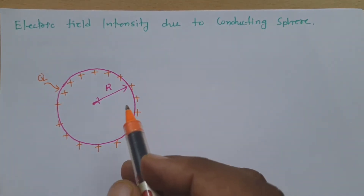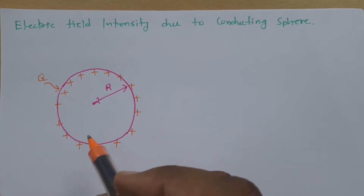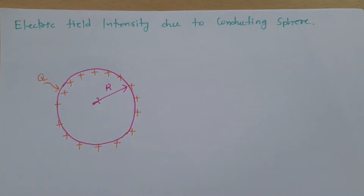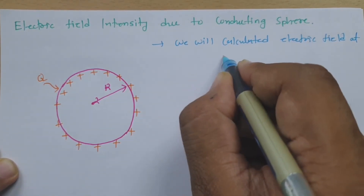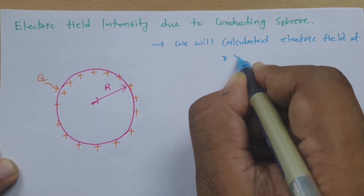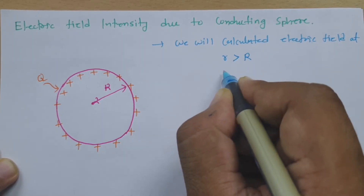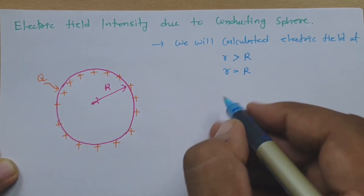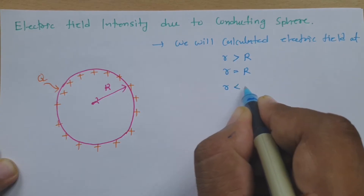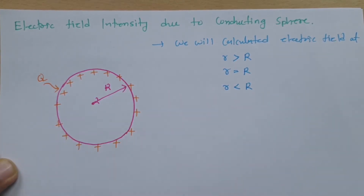Here we are dealing with calculating the electric field. For this calculation, we will consider three different cases. Case one: small r greater than capital R. Case two: small r equals capital R, meaning on the surface. Case three: small r less than capital R, meaning inside the sphere. Let us consider the first case.